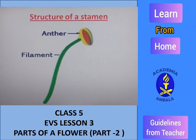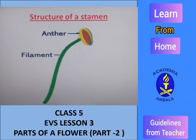Stamen is further divided into two parts. At the top, there is anther which contains pollen grains, and the second part is a tube-like structure attached to it which is called filament.